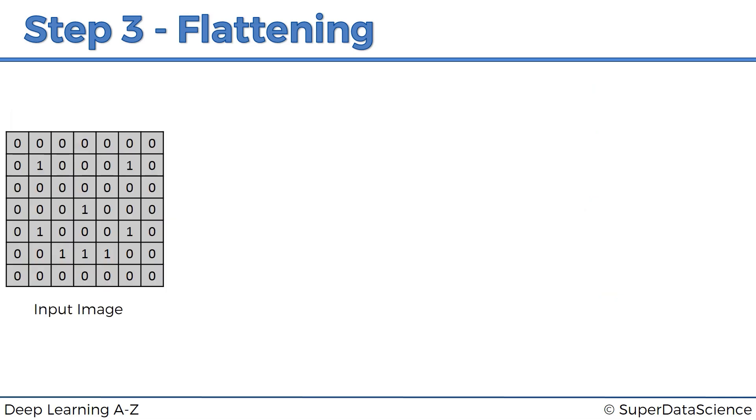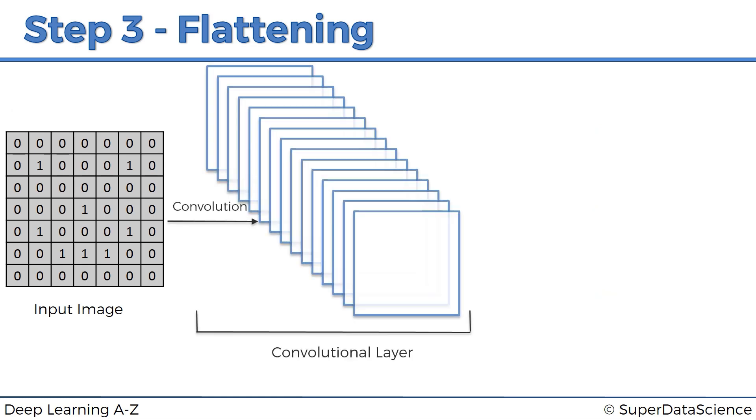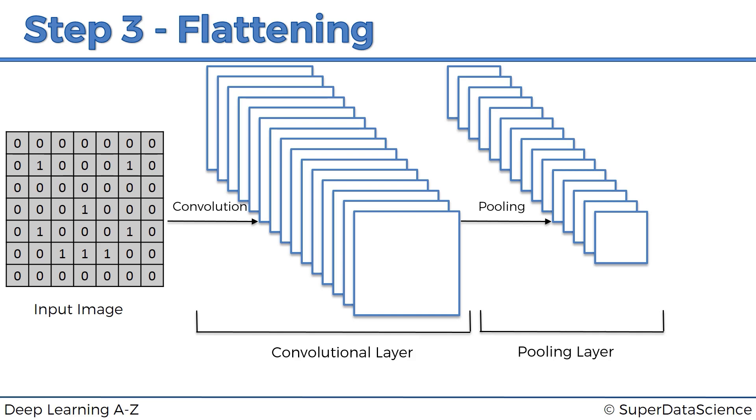And so to sum all of this up we've got an input image, we apply a convolution layer and let's not forget the ReLU or rectified linear units function that we apply after the convolution layer as well, and then we apply pooling and then we flatten everything into a long vector which will be our input layer for an artificial neural network.